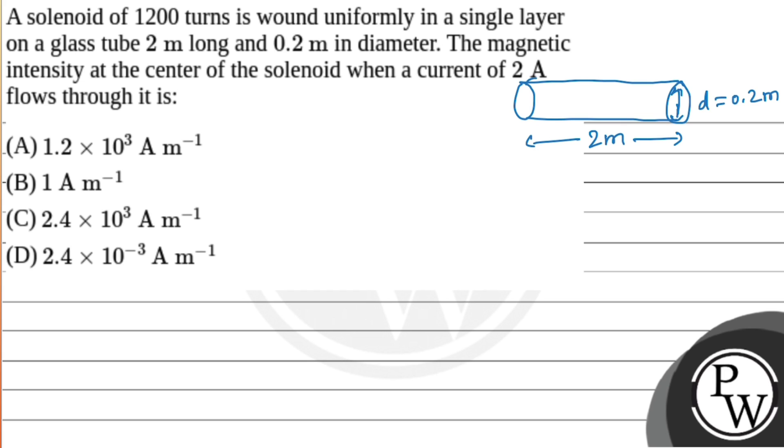The current flow is I equals 2 amperes. We need to find the magnetic intensity at the solenoid's center.